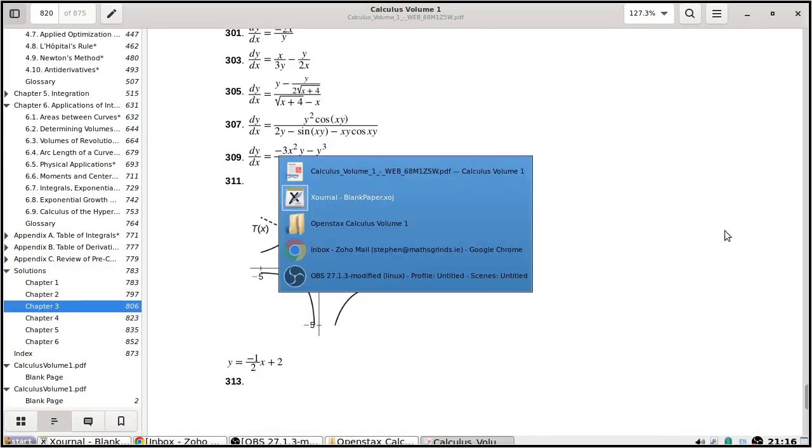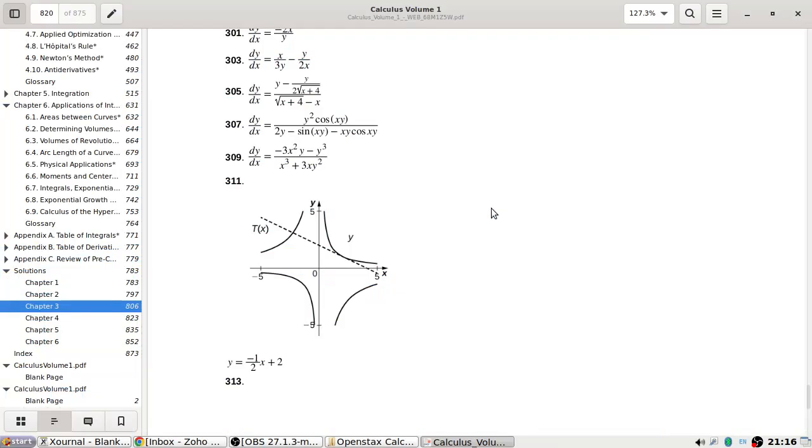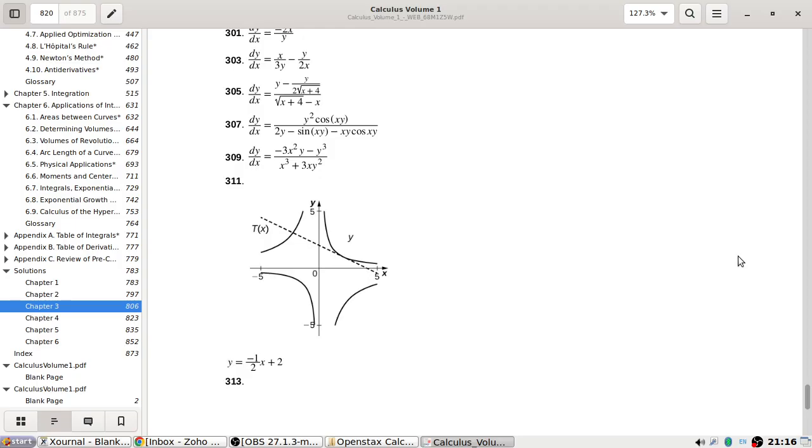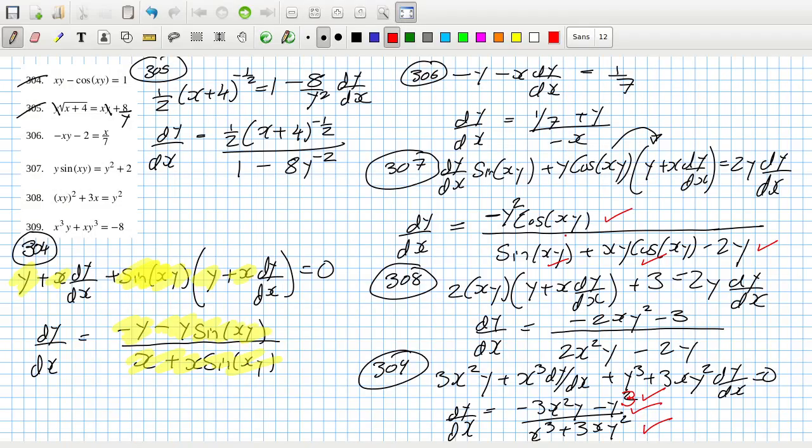Okay, 307. y squared, and maybe the minus is brought down. Yeah, xy cos(xy), sine(xy). Yep, okay.